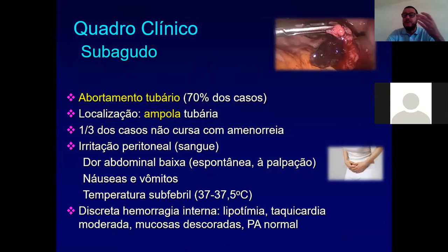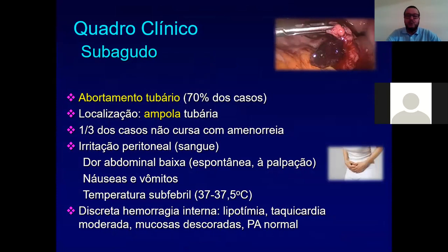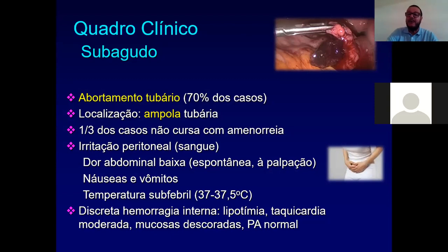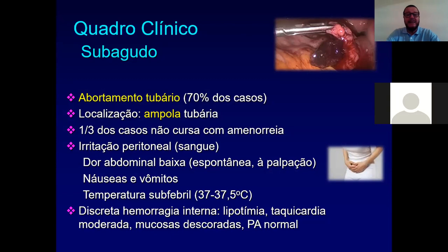No quadro clínico temos o tipo agudo e o subagudo. No quadro clínico subagudo, ele é um problema porque muitas vezes pode confundir principalmente o obstetra. O abortamento tubário ocorre em 70% dos casos — a trompa contrai e aborta. A localização é na ampola tubária. Um terço dos casos não cursa com amenorreia.